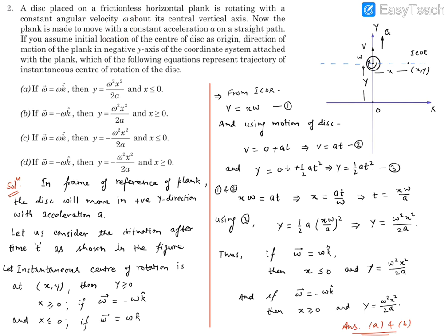So after time t, let's say the disk is located at this location and moving with velocity v and there's angular velocity. Now angular velocity can be in the direction as shown in this figure or may be opposite to this, so that means it may be in the direction of minus k cap or plus k cap.